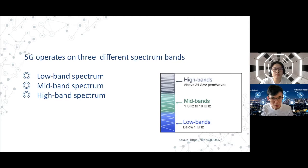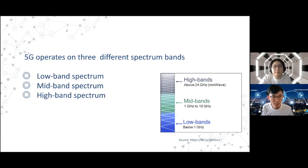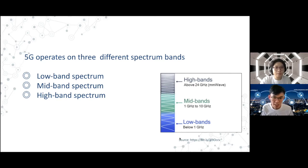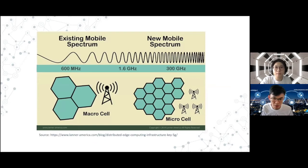Mid band is likely to become available in major cities around the US by the end of 2020. The high band spectrum delivers the highest 5G performance, offering speeds up to 10 Gbps with very low latency. However, its big drawback is a low coverage area and poor building penetration — walls, buildings, and certain materials can block the signal entirely.